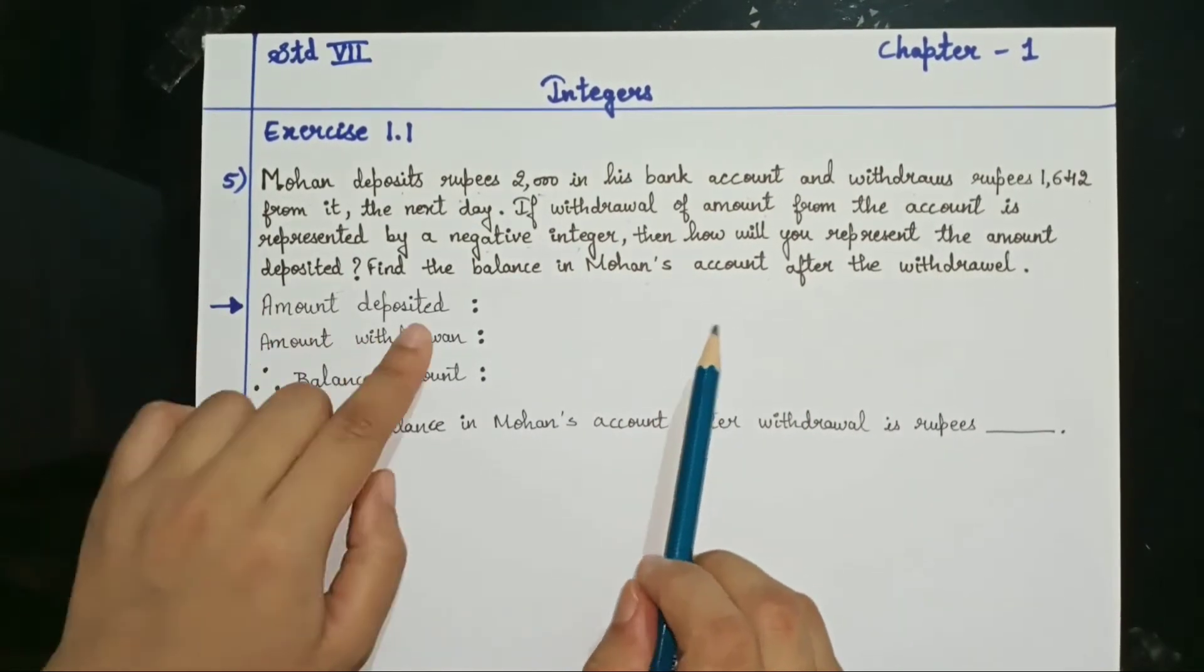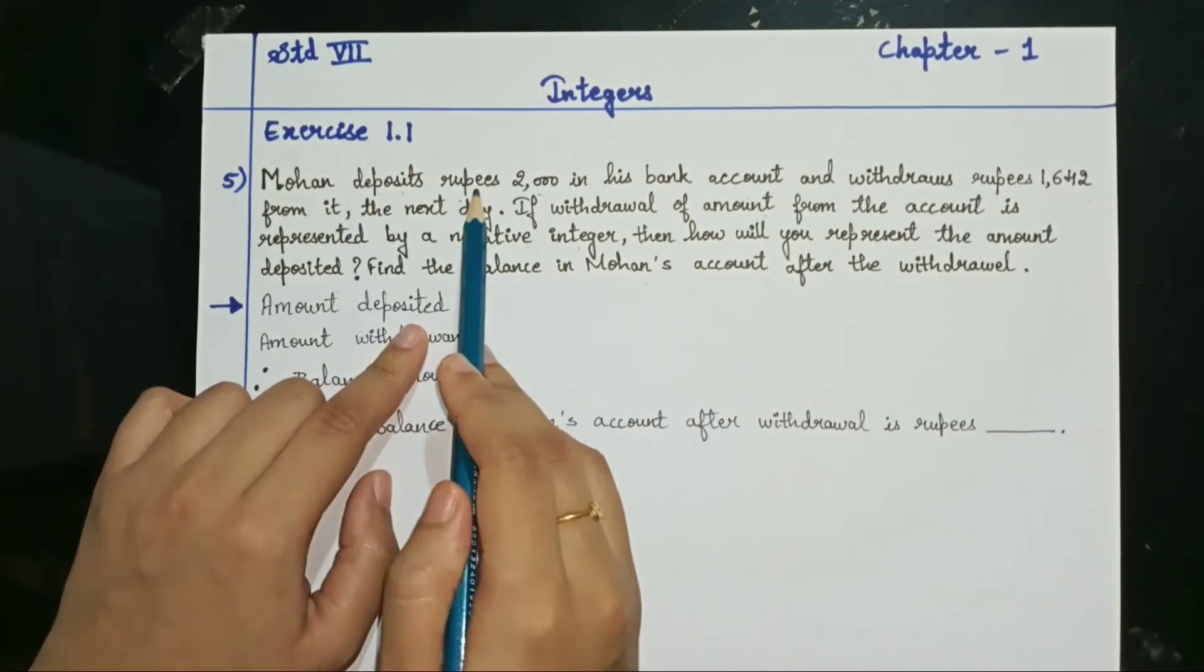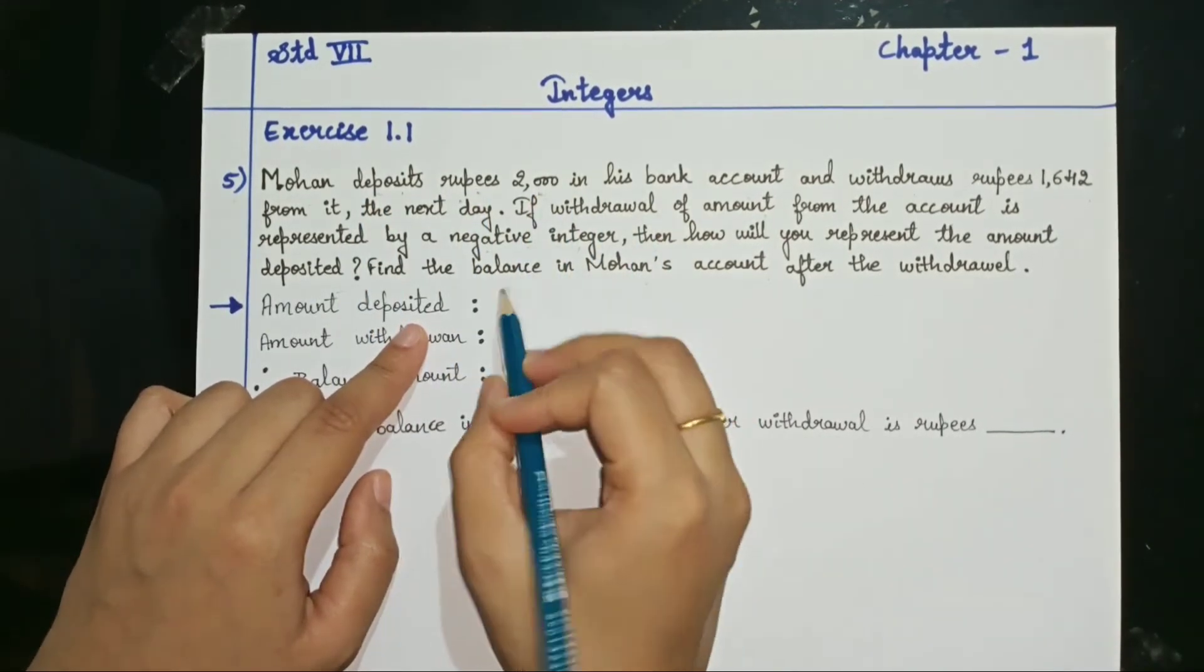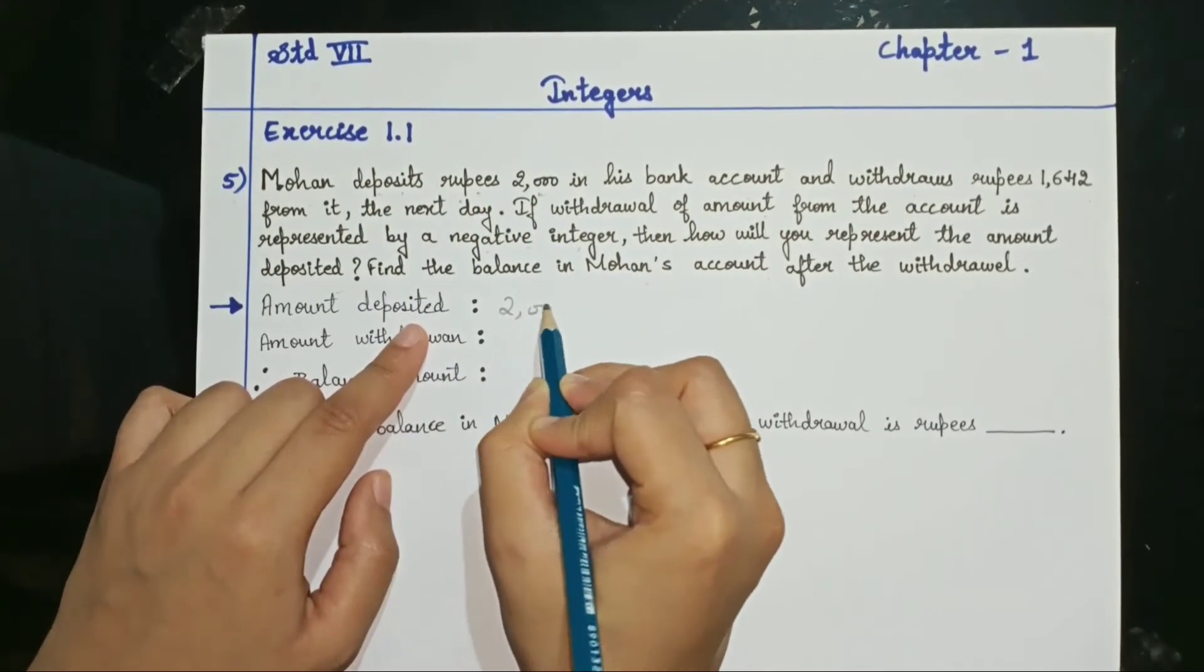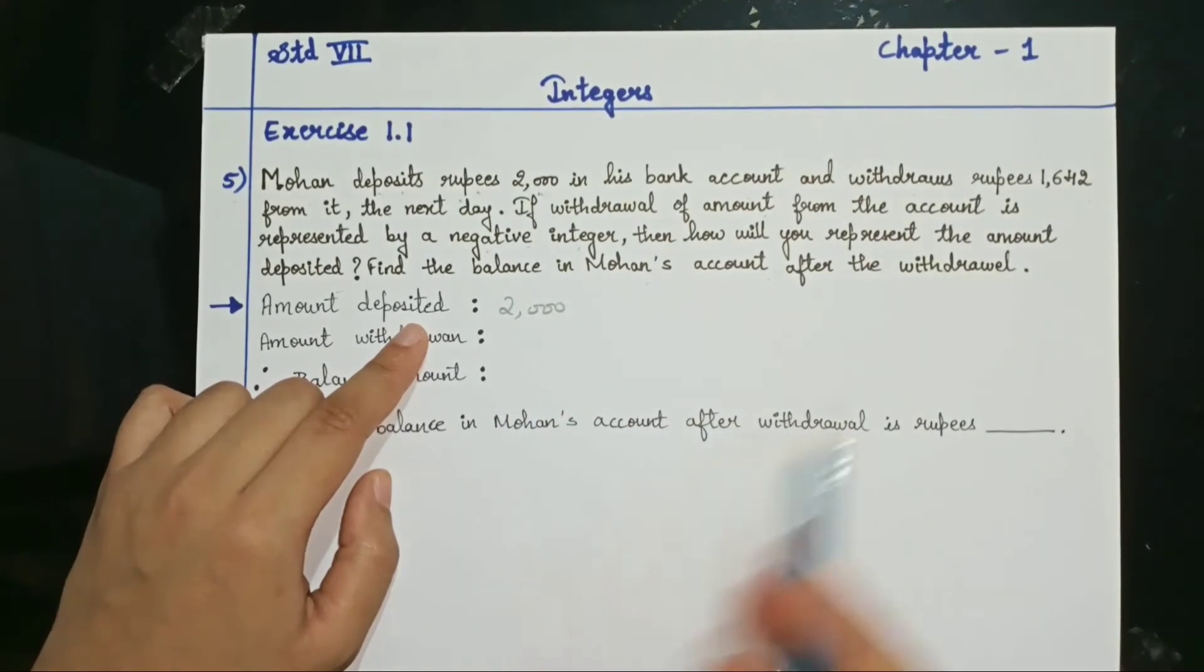So, first let us write down what was the amount deposited. Deposit amount was how much? 2000. So, 2000 rupees.